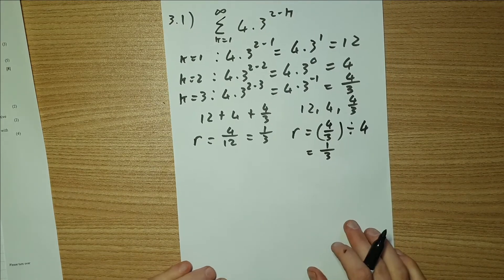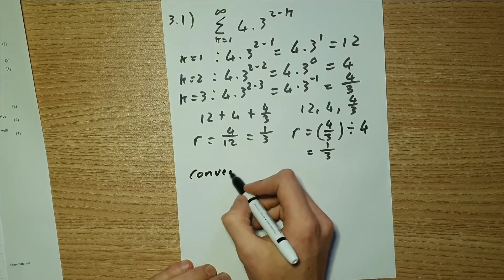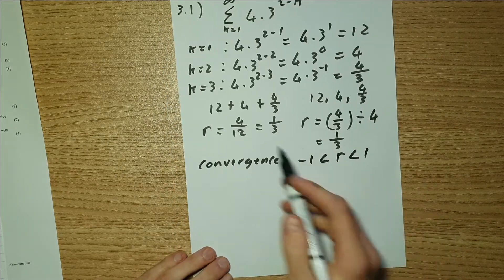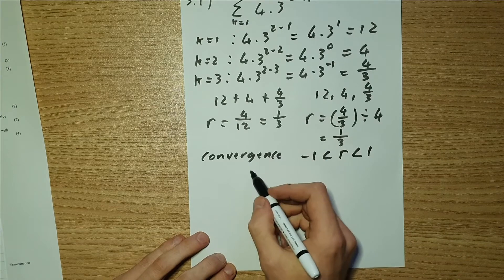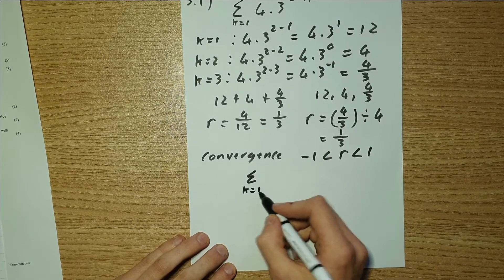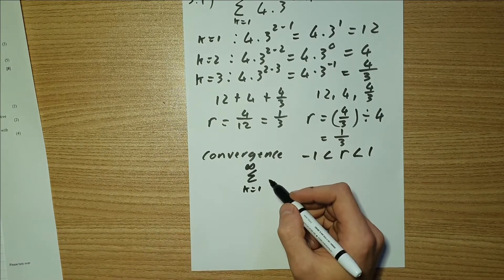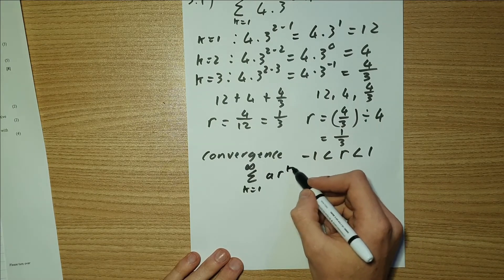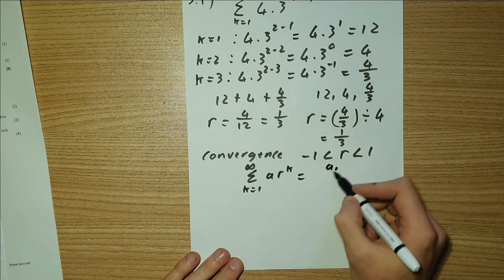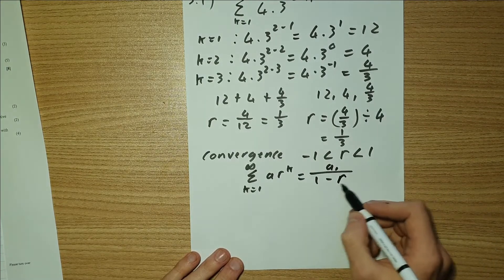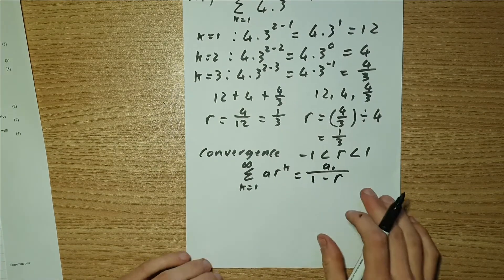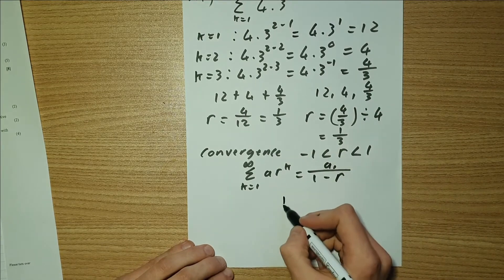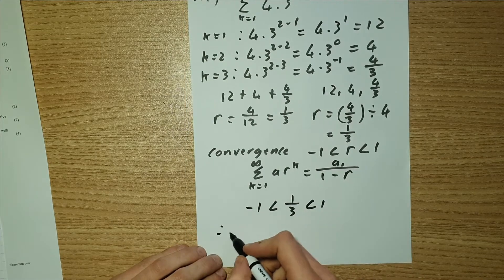Now we need to check convergence. In order for the series to converge, we need r to lie between negative 1 and 1. Remember that the sum to infinity for a geometric series is given as a₁ over 1 minus r. So r needs to be a fraction between negative 1 and 1. We can see that r is 1 over 3, and 1 over 3 is definitely between negative 1 and 1, so therefore we have convergence.